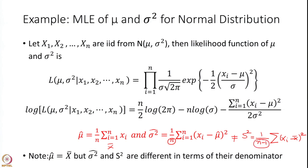Capital S squared is (1/(n-1)) summation of (xi minus x bar) squared. So mu hat and x bar are the same, but they differ in the denominator. The maximum likelihood estimator of population variance has a denominator of n, while sample variance has a denominator of n minus 1.